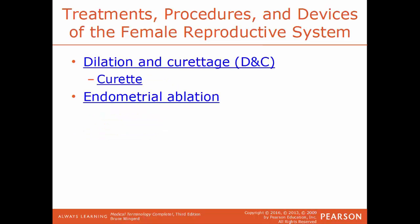D&C, dilation and curettage, is a surgical procedure involving dilation of the cervix and curettage of the uterus — done for removal of a cyst, tumors, tissue after a miscarriage, or during an abortion. The instrument used is a curette, a tool used to scrape tissue from the inside of the uterus.